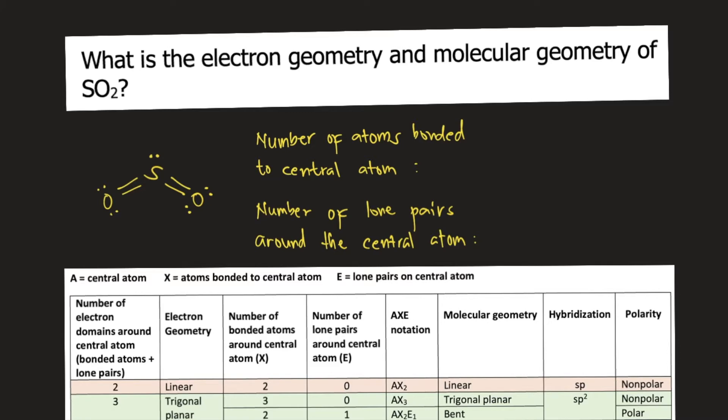Let's count first the number of atoms bonded to the central atom. How many atoms are bonded to sulfur? We have one, two. Two atoms bonded to the central atom.